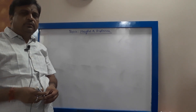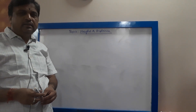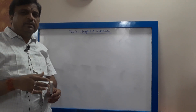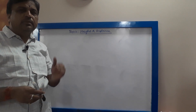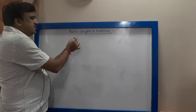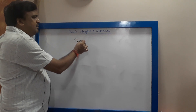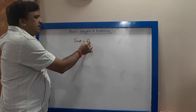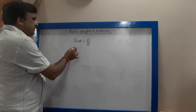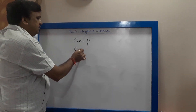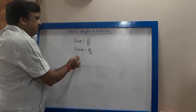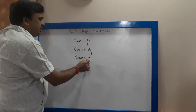Students, today we will start with the Height and Distance chapter. This chapter requires previous knowledge of Trigonometric Ratios. Sin Theta is opposite upon hypotenuse. Cos Theta is adjacent upon hypotenuse. And Tan Theta is opposite upon adjacent.